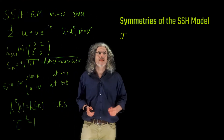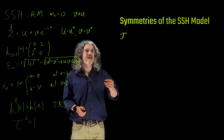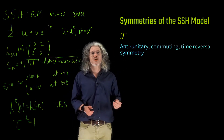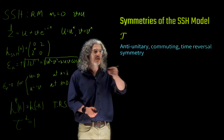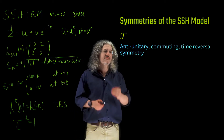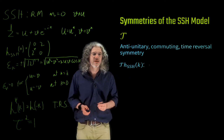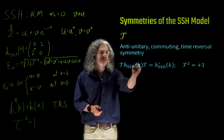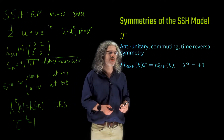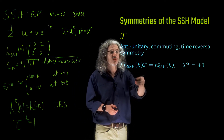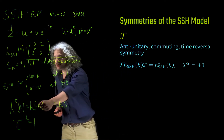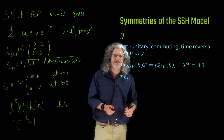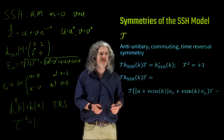To summarize the symmetries of the SSH model: tau is an anti-unitary, commuting operator, representing time reversal symmetry. We need to check that H-star(k) equals H(-k) and that tau squared equals 1. Let's calculate tau H_SSH(k) tau. When we operate with tau on the Hamiltonian, U goes to U-star, V to V-star; sigma goes to sigma-star and sigma_Y to sigma_Y-star. Since U equals U-star and V equals V-star, we have the same real terms.